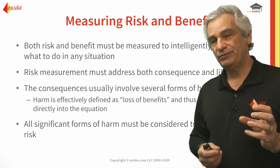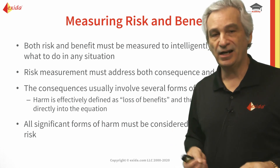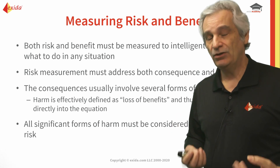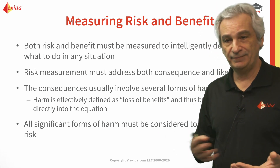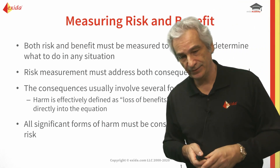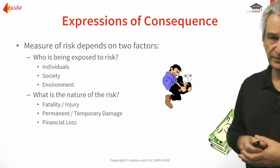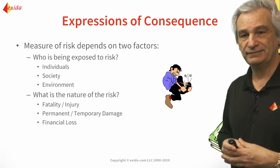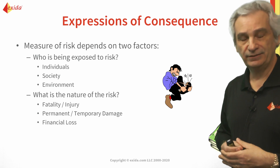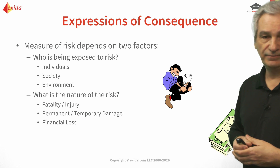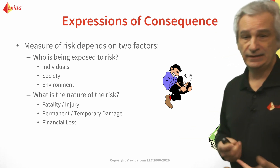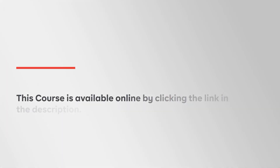Consequence normally implies some form of harm. Harm can be defined from a people perspective - it can be some form of fatality, or it could be an injury which could be permanent or temporary, and there will be degrees of that. We need to understand all the significant forms of harm to properly consider the risk - if we don't do that then we're not doing our job properly. The expression of consequence also considers who is being exposed: plant personnel, and if we're in a populated area, the local populace and society. There may also be some environmental impact. And there is associated financial loss with all of this.